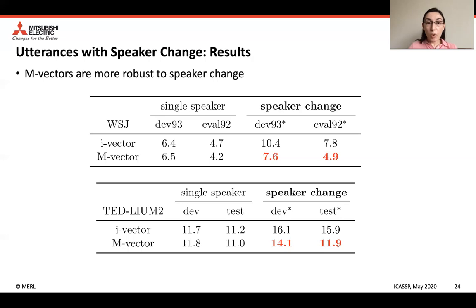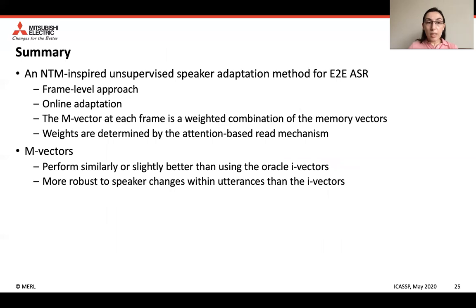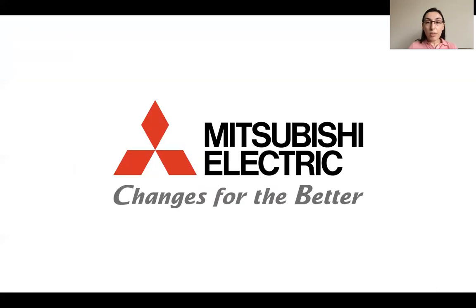This shows that m-vectors are more robust to speaker change. In summary, we introduced a neural Turing machine-inspired unsupervised speaker adaptation method for end-to-end ASR. This frame-level approach is suitable for online adaptation. The m-vectors are computed at frame level as a weighted combination of memory vectors, with weights determined by the attention-based read mechanism. The m-vectors perform similarly or slightly better than oracle i-vectors on WSJ and Tedlium, and are more robust to speaker changes within utterances. Thank you for listening to our presentation.